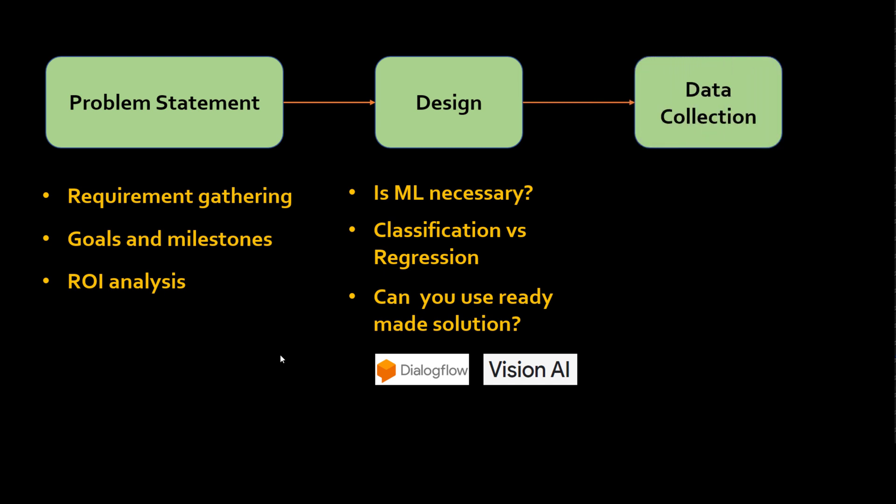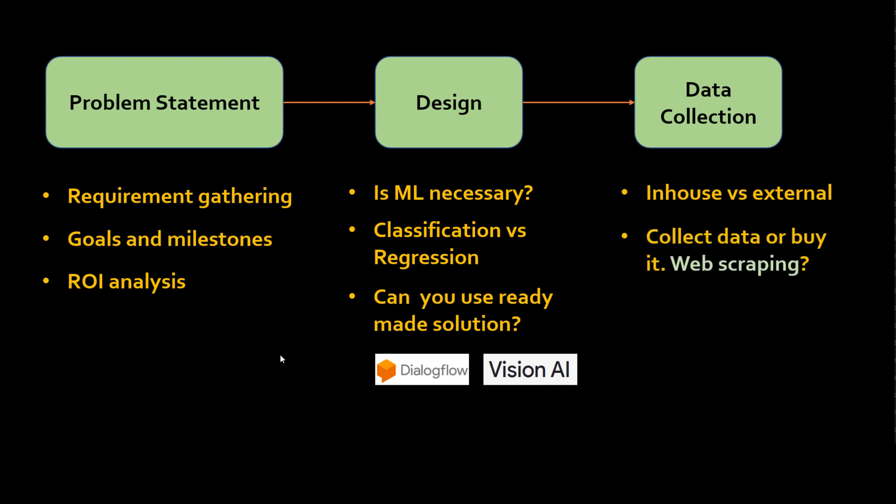If you decide to train your own model, then comes the data collection phase. Building any model requires a lot of training data. You need to determine whether that data comes from in-house sources — such as MySQL databases, document stores, or MongoDB — or from external sources. Can you buy data from somewhere or use web scraping to collect data from the internet?